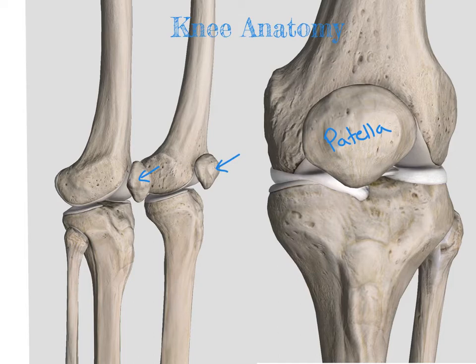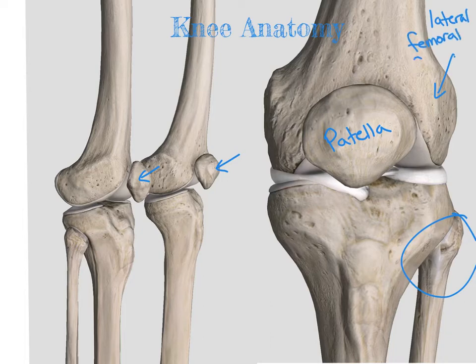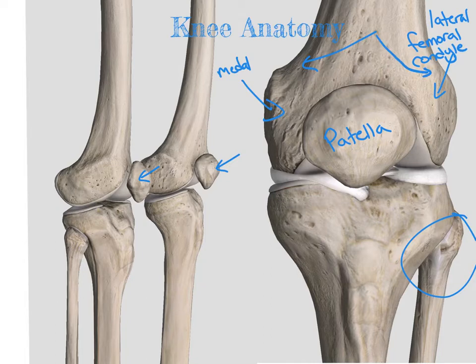Looking at the anterior side, we determine which side is lateral based on the fibula. Here we have our lateral femoral condyle, and then we also have the medial femoral condyle. Above the condyles on either side, we have the femoral epicondyles — both a medial and a lateral.